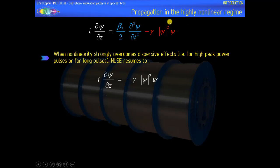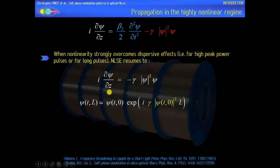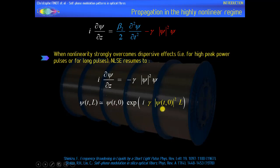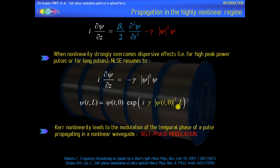Here we will only consider the regime where dispersion can be neglected — what we call the highly nonlinear regime. In this case the nonlinear Schrödinger equation can be solved approximately analytically, and one can see that the intensity profile of the pulse is not modified by the Kerr nonlinearity. The nonlinearity only affects the temporal phase of the pulse, which is why it is called self-phase modulation.